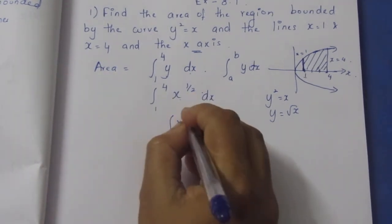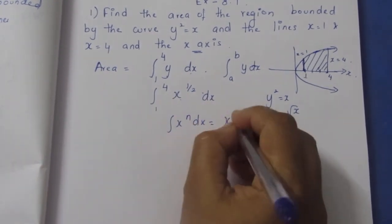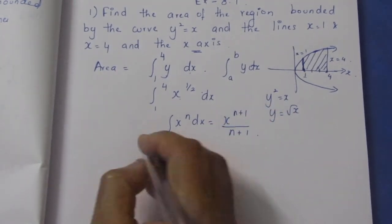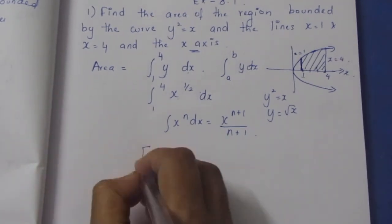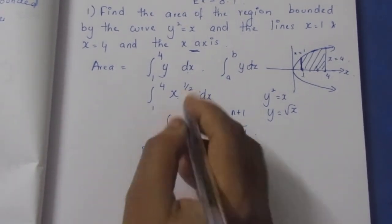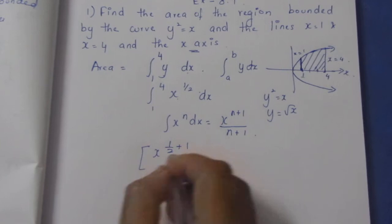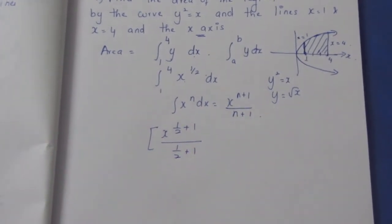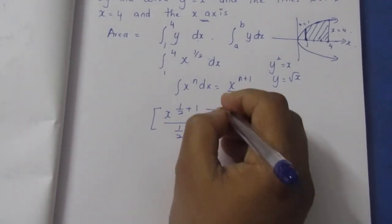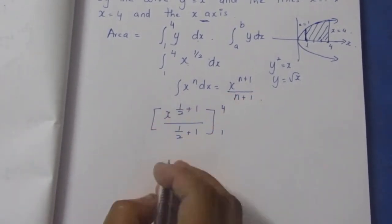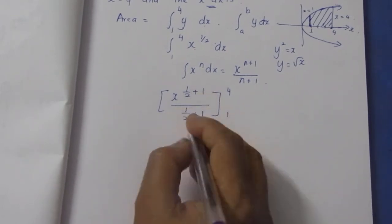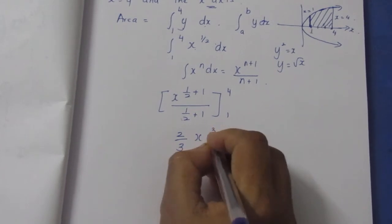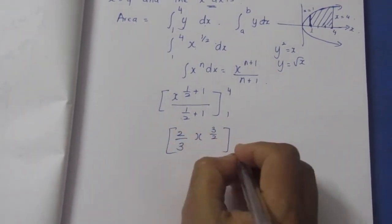This is x power n dx, which means x power n plus 1 by n plus 1. We are integrating x power one-half, so one-half plus 1 is 3 by 2. The result is 2 by 3 times x power 3 by 2, evaluated from 1 to 4.